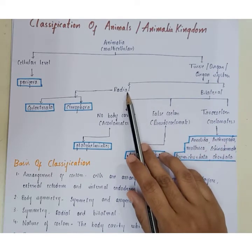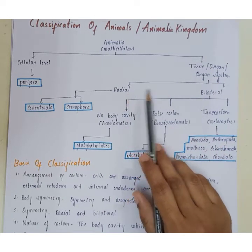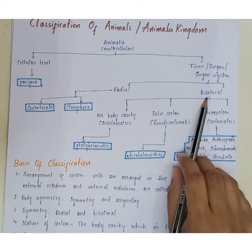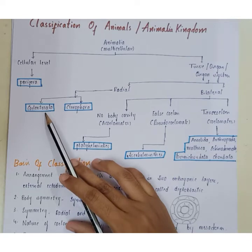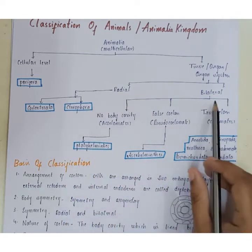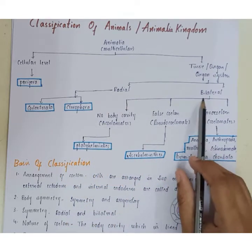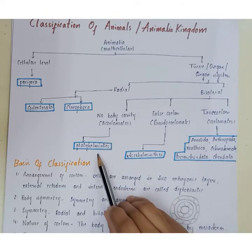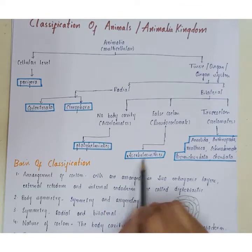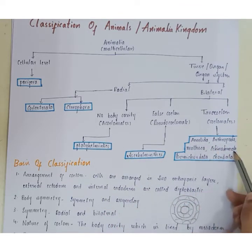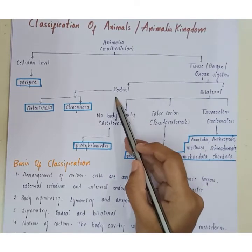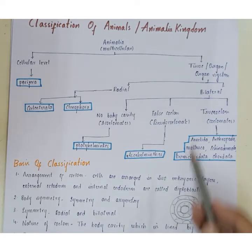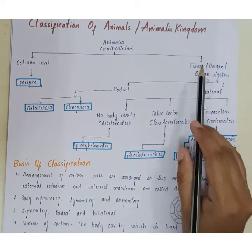Based on symmetry, animals are further classified. Radial symmetry includes Cnidaria and Ctenophora. Bilateral symmetry includes Platyhelminthes, Aschelminthes, Annelida, Arthropoda, Mollusca, Echinodermata, Hemichordata, and Chordata. Radial symmetry means an organism can be divided into two equal halves in any plane, while bilateral symmetry means it can only be divided into two equal halves in one plane.